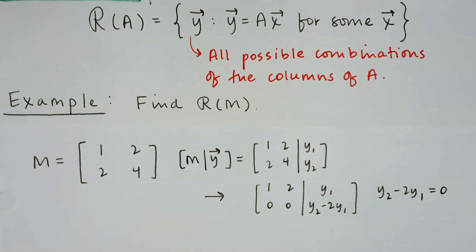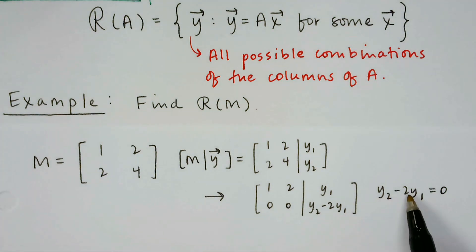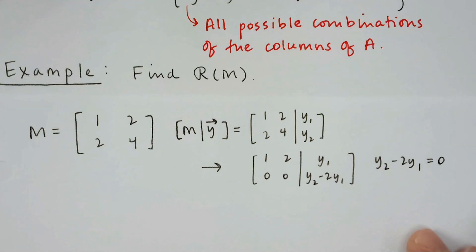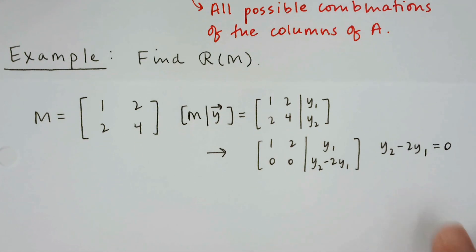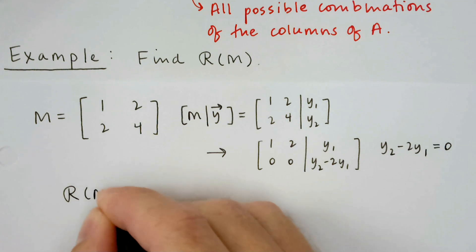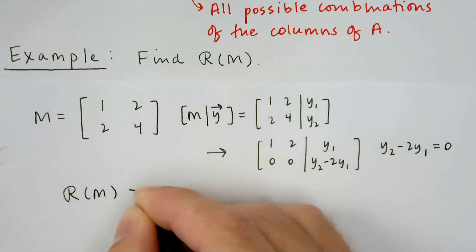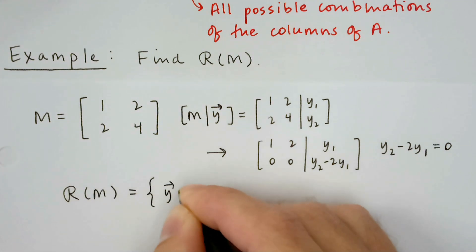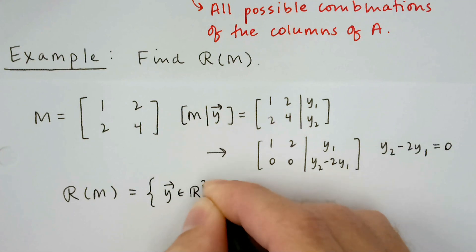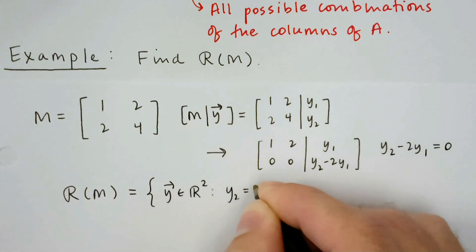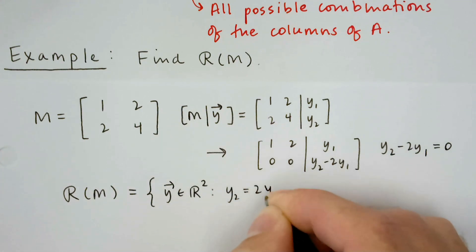That was what I was saying at the beginning — the second component just needs to equal twice the first component. So y₂ equals two times y₁. The range of M is the set of all y vectors in R² such that y₂ is equal to two times y₁.